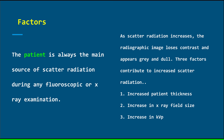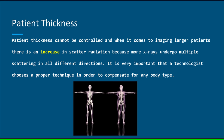Factors that affect scatter radiation: The patient is always the main source of scatter radiation during any fluoroscopic or x-ray examination. As scatter radiation increases, the radiographic image loses contrast and appears gray and dull. Three factors contribute to increased scatter radiation: increased patient thickness, increase in the x-ray field size, and an increase in KVP. Patient thickness cannot be controlled, and when it comes to imaging larger patients, there is an increase in scatter radiation because more x-rays undergo multiple scattering in all different directions. It is very important that a technologist chooses a proper technique in order to compensate for any body type.